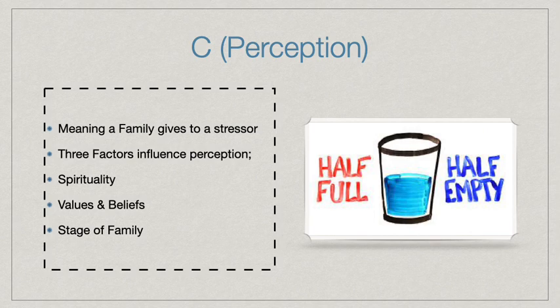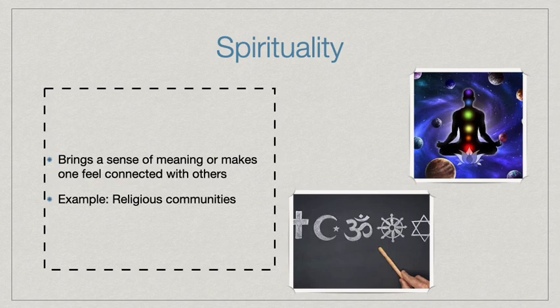Let's move on to C, which is perception. Perception is the impact of the stressor event or crisis depending on the meaning the family gives it. There are three factors that influence perception: spirituality, values and beliefs, and stage of family life. For example, someone's perception can change to either seeing a cup as half full or half empty. Spirituality is what brings a sense of meaning or makes one feel connected with others, such as religious communities, though it can also include meditation and aligning one's inner self.